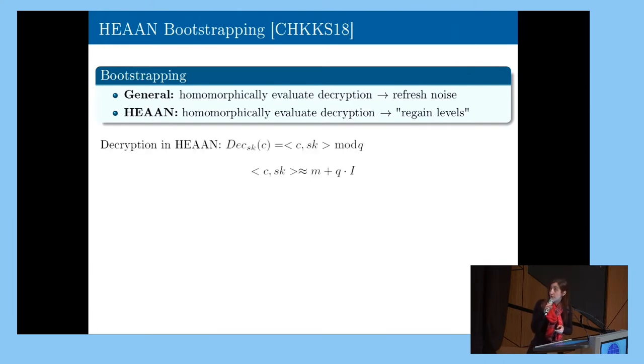So the homomorphic decryption circuit for HEAN, as I said just a few minutes ago, is an inner product between the ciphertext and the secret key, reduced modulo q. So if we don't reduce modulo q, what we retrieve as a result of this inner product is an addition of the decryption between the message and q multiplied by a factor e.